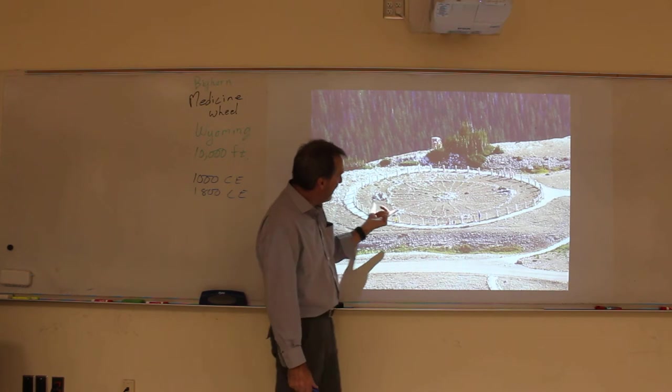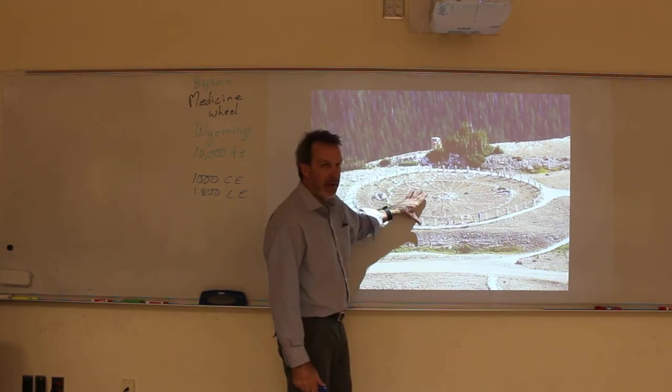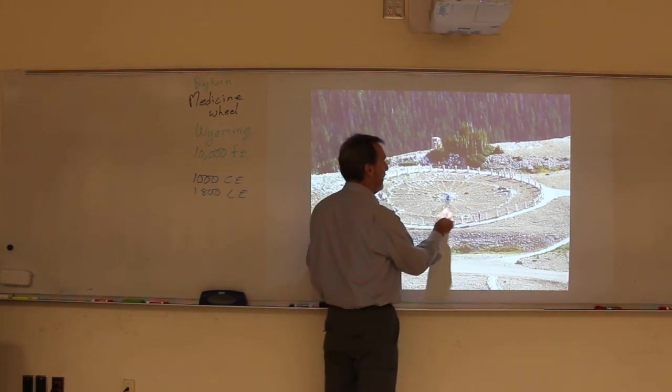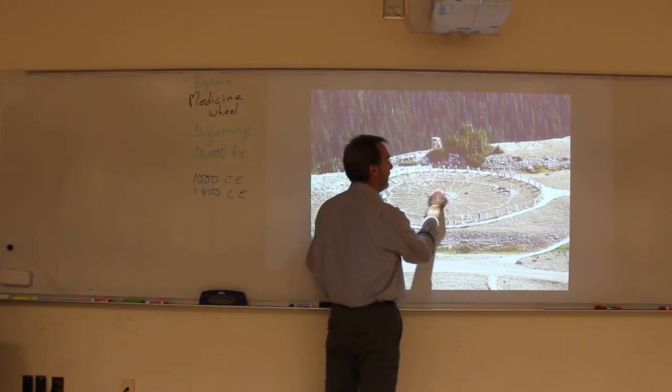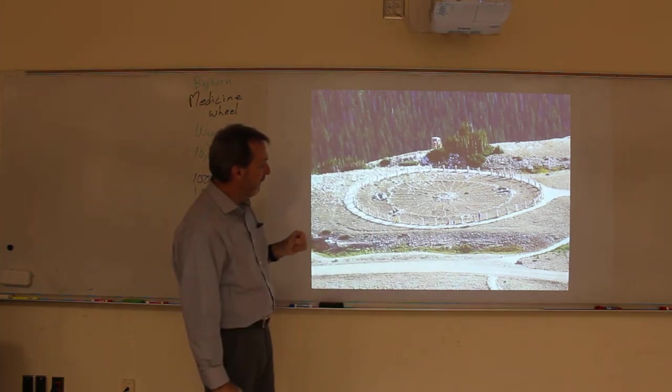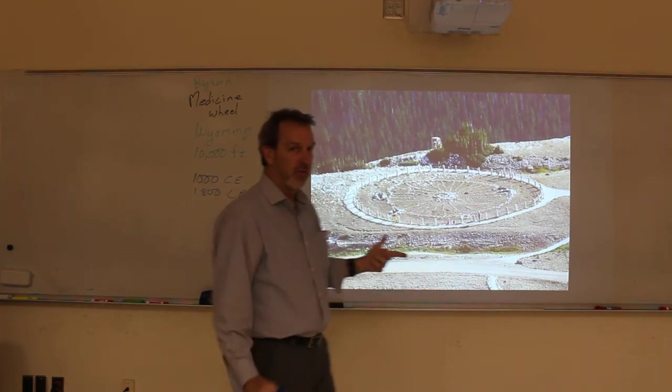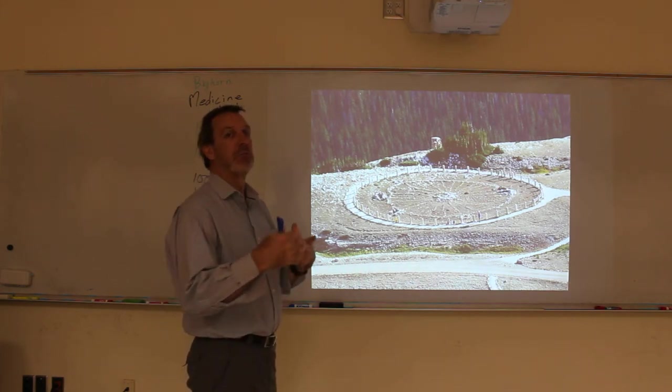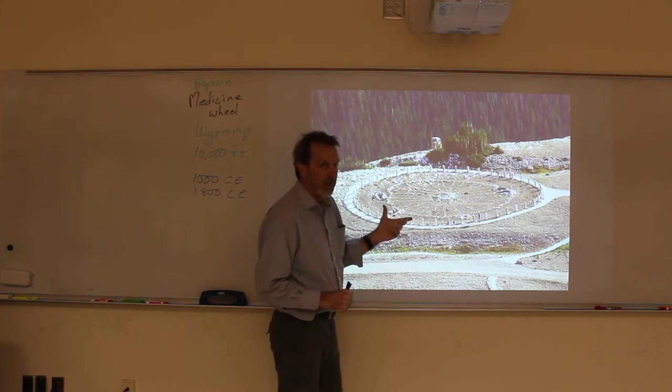What they did is they took a bunch of rocks and put them in a bicycle wheel pattern. In the center here, this is the hub, and they have lines of rocks coming out in specific directions. We don't think there's any significance to the number of spokes. This is not the only one - there are about 20 or 30 of them throughout Wyoming, Montana, and up into Alberta, Canada. They're all different shapes and they all look different.